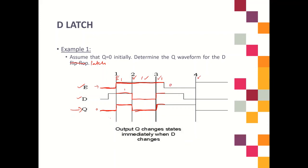Then E becomes equal to 0. When E equals 0, Q cannot be changed. Along this whole line where E is 0, Q cannot change. Since the previous value Q carries is 1, Q will continue to carry 1 until the end of this section — even though D changes to 0 in the middle, Q cannot be changed because E is 0. So this whole line remains equal to 1.